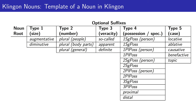Here we see the template of a noun in Klingon. Every Klingon noun must begin with a noun root. A Klingon noun may consist only of the noun root, or it may have one or more optional suffixes.